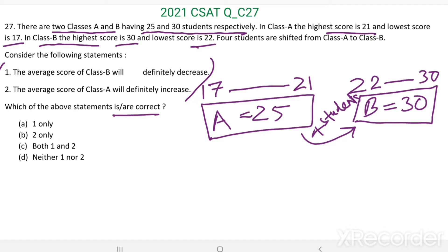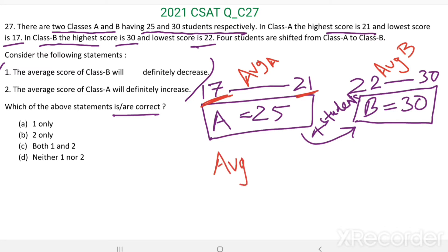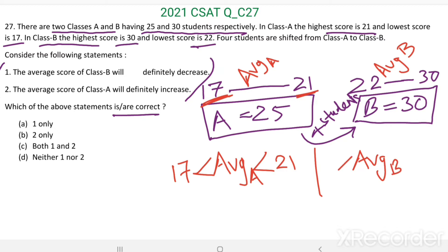Average always lies between the lowest score and highest score. So the average score of class A is between 17 and 21, and the average score of class B is between 22 and 30.